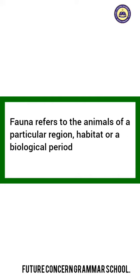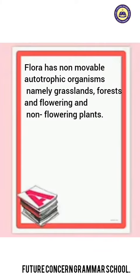Fauna refers to the animals of a particular region, habitat or a biological period. Flora has non-movable autotrophic organisms, namely grasslands, forests, and flowering and non-flowering plants.